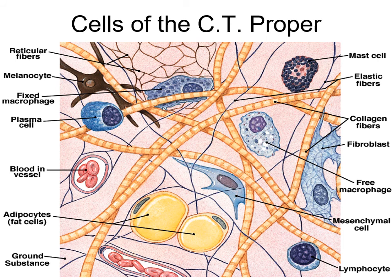Looking at the connective tissue proper image: what immediately captures you is the big, striped, thick fibers - those are collagen fibers. Collagen fibers are very strong - so strong that if you built a beam out of it, a plane would bounce off. Collagen protein fibers give strength to tissues. There are also scattered reticular fibers that help form the stroma - a very loose framework.